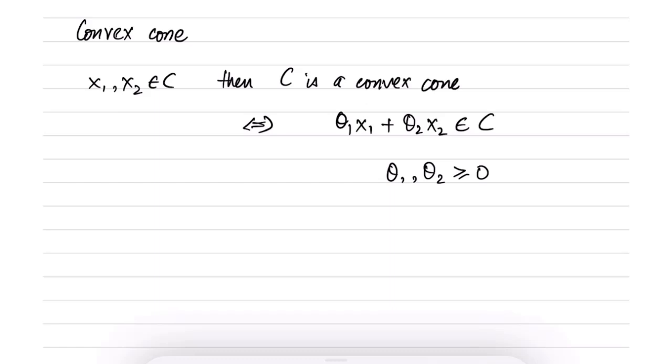This is the definition of a convex cone. Contrast this with the definition of the convex set and affine set, where we had a restriction in terms of what θ1 and θ2 can be with respect to each other. We always required that θ1 plus θ2 sum up equal to 1.